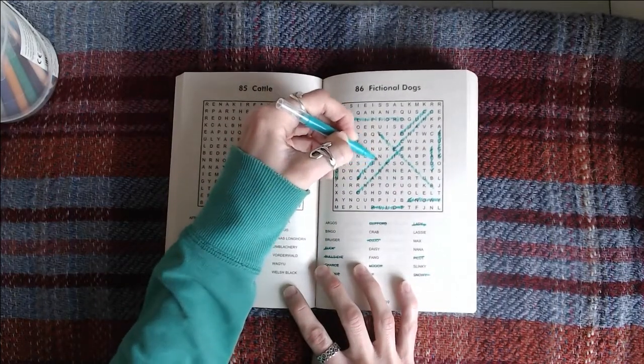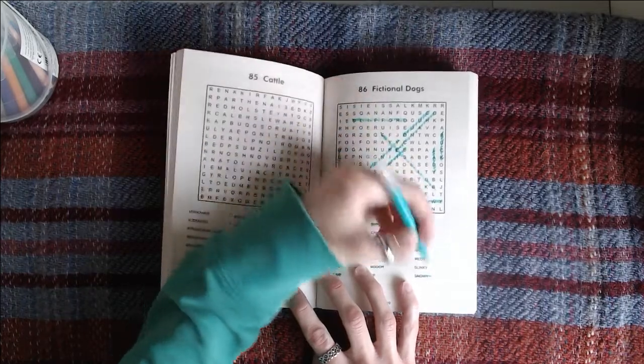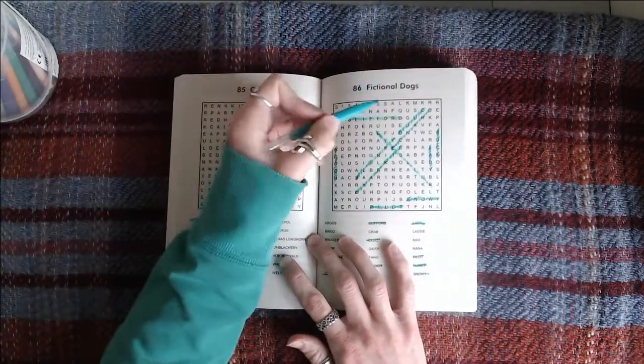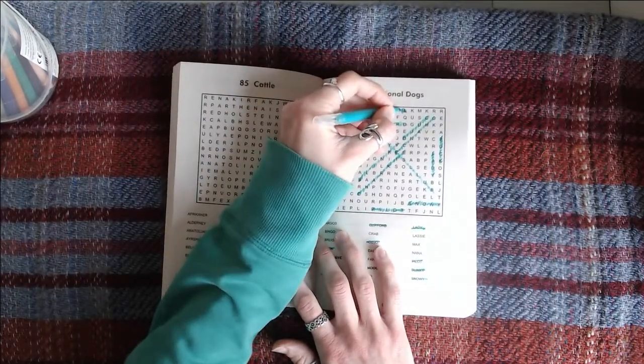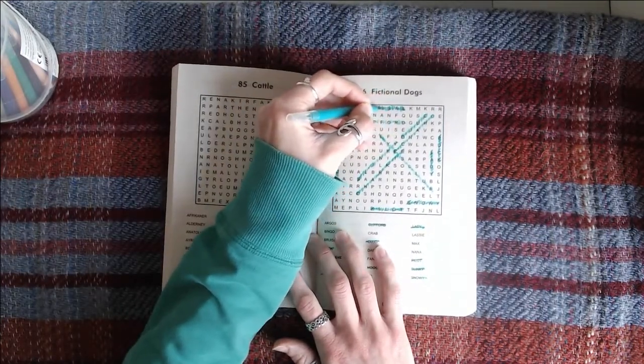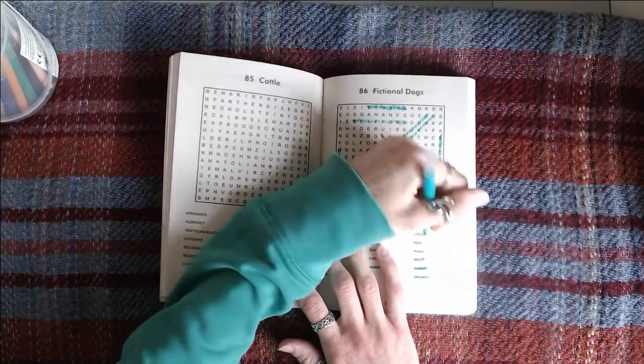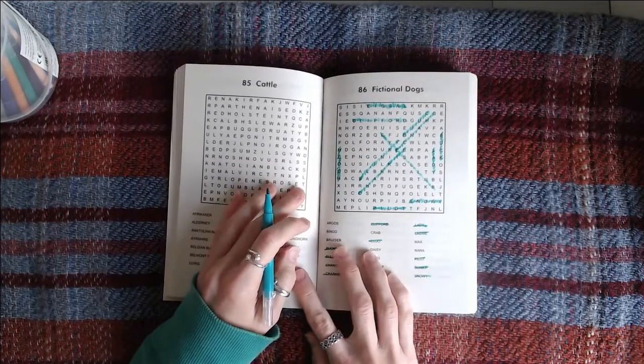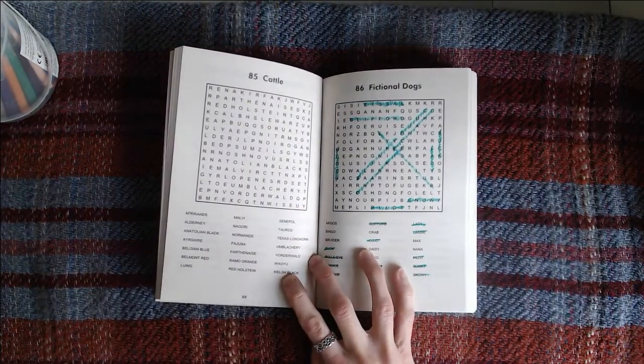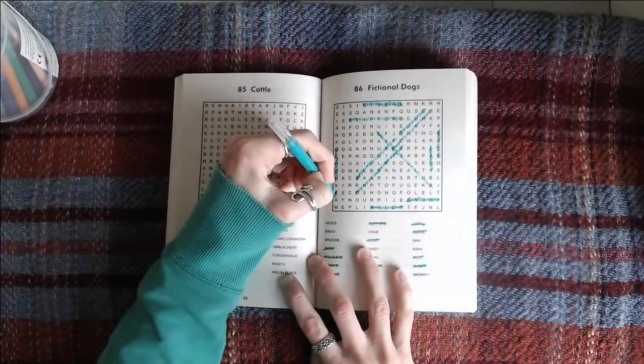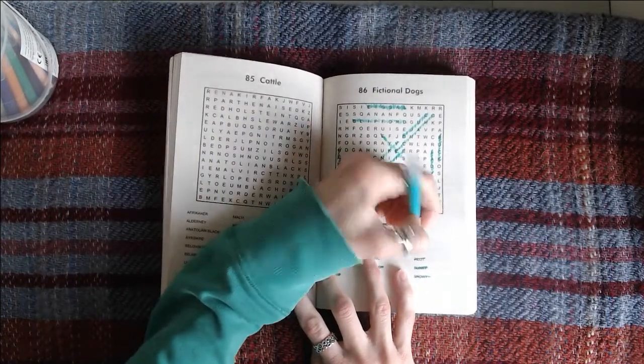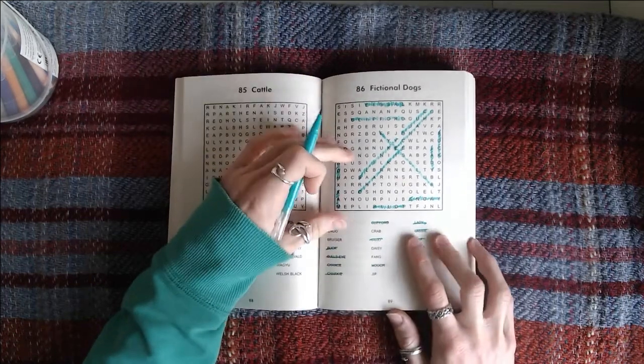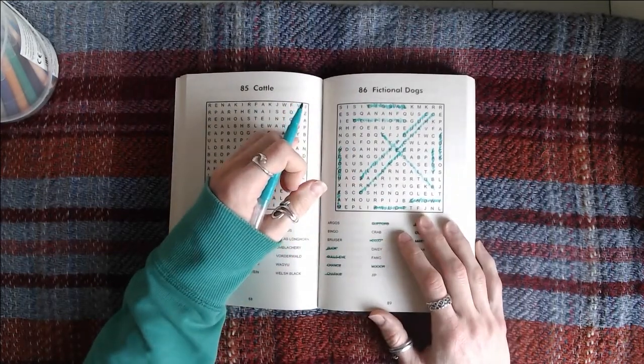I need to get on with sorting stuff out. Slinky. I kept seeing one up here but I couldn't see what it was. I see, I used to watch that. Max, that shouldn't be too difficult because there's not many X's I'm sure. What have we got left?